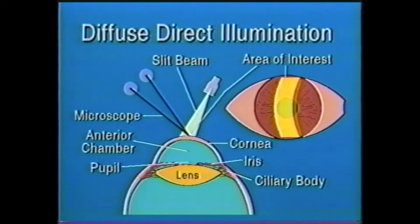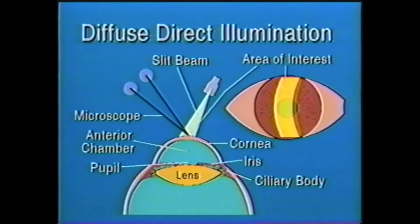First, diffuse illumination. This uses a broad light beam that provides a panoramic view, like using a flashlight. It is good for outlining large surface areas such as a corneal abrasion.